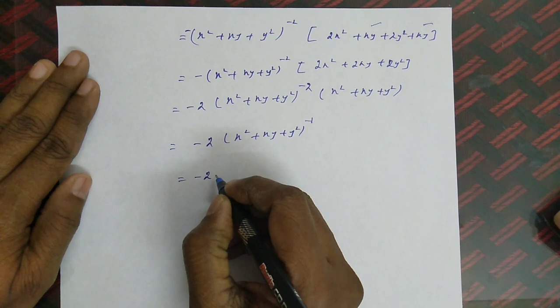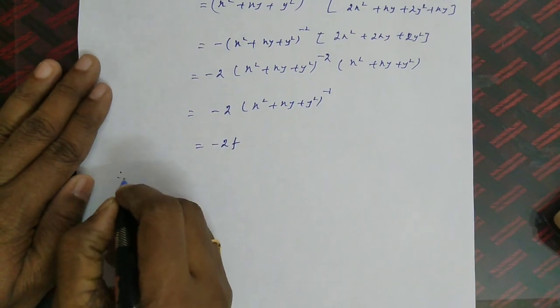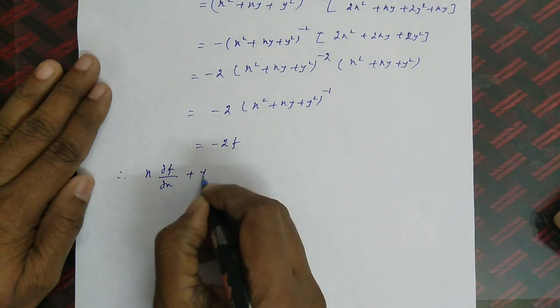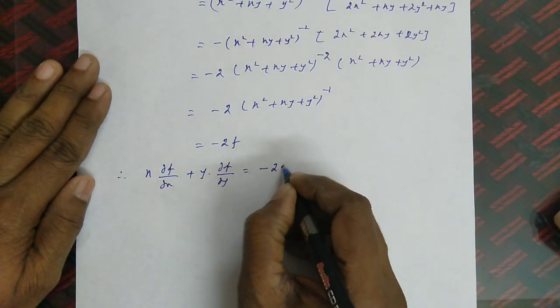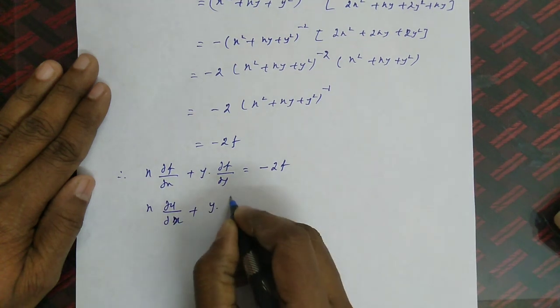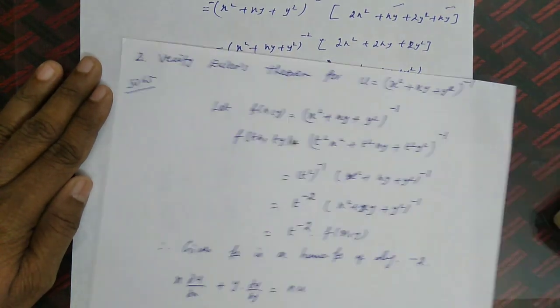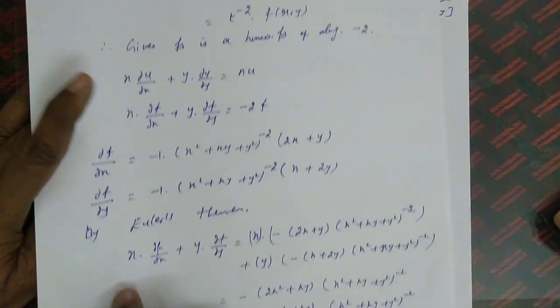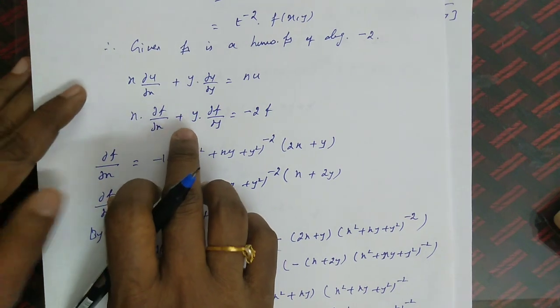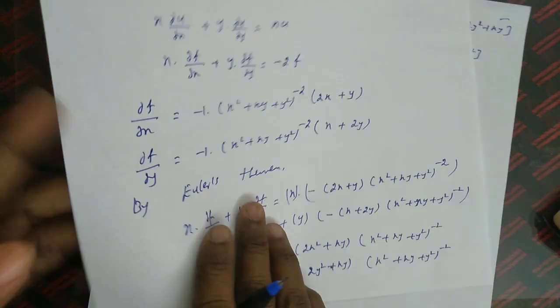This simplifies to −2 · (x² + xy + y²)^(−1) = −2f = −2u. So x · ∂u/∂x + y · ∂u/∂y = −2u, and Euler's theorem is verified. The key steps are: check homogeneity, determine degree n, then show that x · ∂f/∂x + y · ∂f/∂y = n·f.